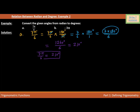That is our answer for Part A: 210 degrees. Now let's try Part B. Part B is the angle negative 3π. I want to convert negative 3π into degrees, so I will multiply negative 3π by 180 over π. I'll write negative 3π times 180 degrees over π.